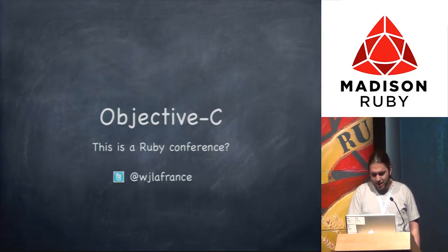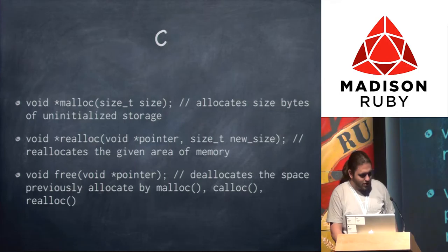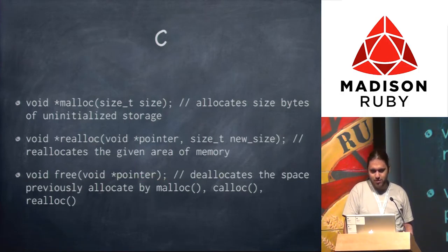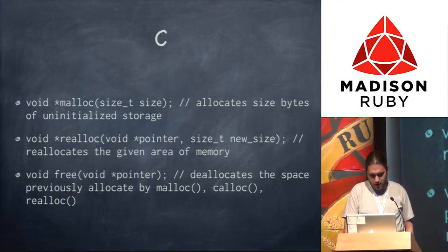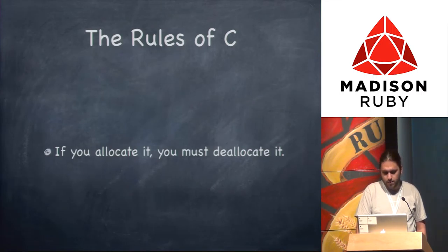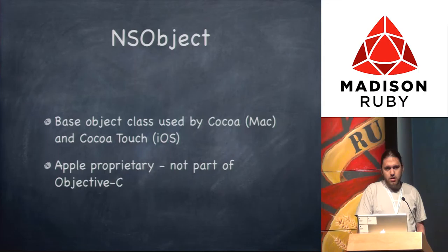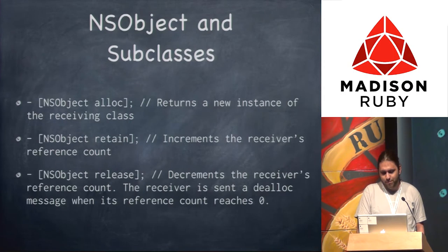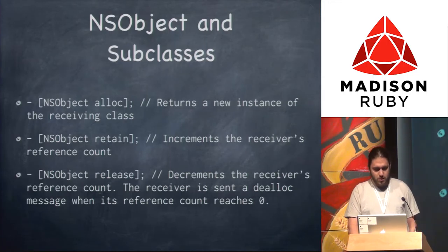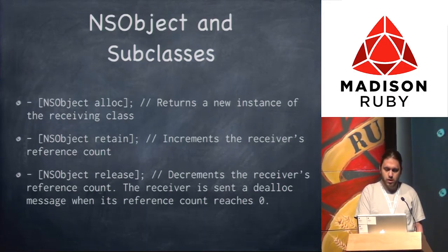I wanted to talk about Objective-C, starting out with memory management because you still get to do that with Objective-C. The rules of C memory management: you allocate memory and you deallocate it when you're done with it. The base class you use in Objective-C is NSObject, used in both Cocoa and Cocoa Touch for Mac and iOS development. It's not actually part of Objective-C itself. The memory management model is you allocate your object and then you can retain and release it — it's a reference counting language.